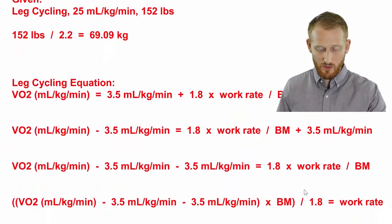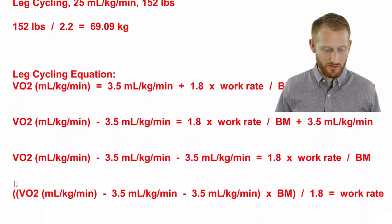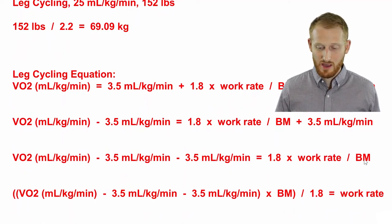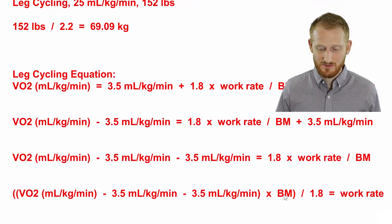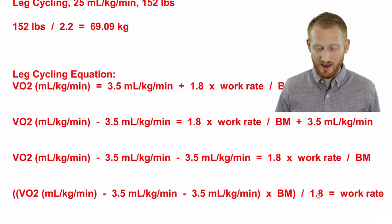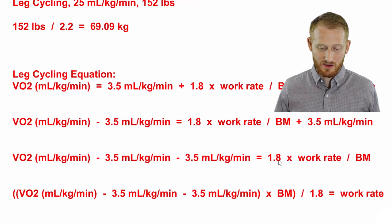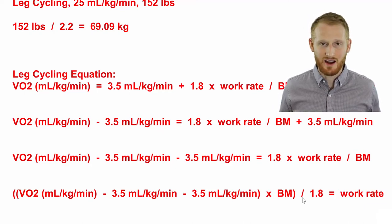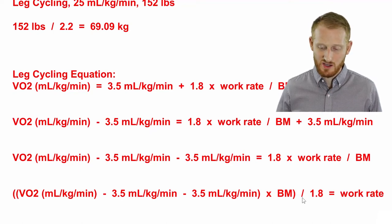If we move it to the other side of the equation, we end up with everything we had before multiplied by body mass, because remember it was division on this side, so we need to move to the other side and make it multiplication. And divide that by the 1.8, because it was multiplication on this side, so we need to make a division on the other side, which is to reverse the sign essentially when we move it across the equal sign.